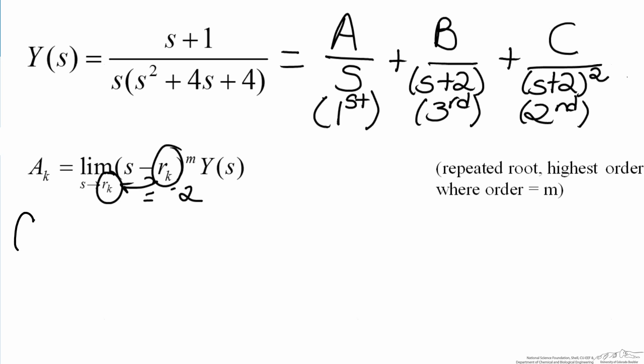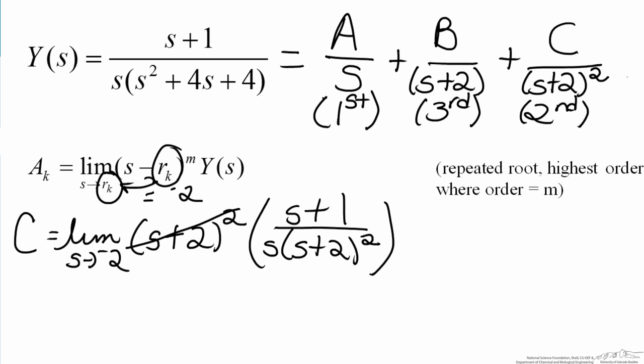So now to solve for C, we just substitute in, so we'll have C equals the limit as s approaches negative 2 of s minus negative 2, so that's just s plus 2 squared, multiplied by Y of s. Once again, you will see cancellation with the s minus r sub k term, and the s plus 2 term, and as a note here, the m term here corresponded to 2, because that represents the highest order of the equation. So when we evaluate what's left at negative 2, we end up with a half, and that is the value of C.